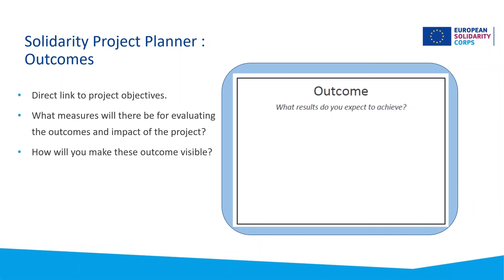Last but not least, we come to the outcome section of the planner. In many ways, this final box should link up to the very first box — outcomes and objectives should be similar and cyclical. So if the project aimed to tackle plastic waste and encourage sustainable living, it is expected that the outcome would be lower levels of plastic pollution and a growing interest in green and eco lifestyles. The outcome section is really about how the project will measure that this has taken place.